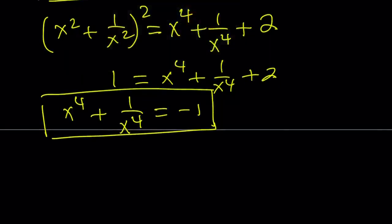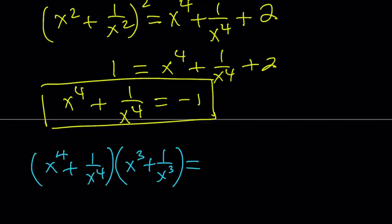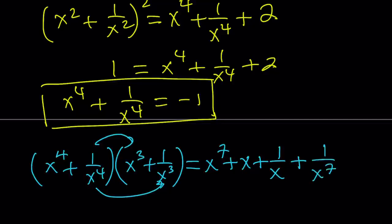So now we got the fourth powers and the third powers. Let's put it together. I'm going to just multiply them. I'm not even thinking about an expansion formula. When you multiply these things, using the distributive property, you're going to get x to the 7th power. When you multiply x to the 4th by 1 over x cubed, you're going to get x. 1 over x to the 4th times x cubed gives you 1 over x. And when we multiply the reciprocals, we get 1 over x to the 7th.